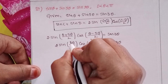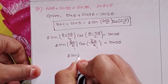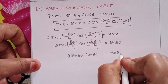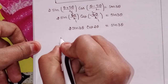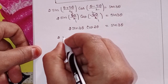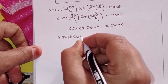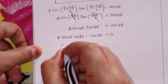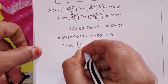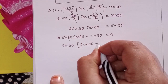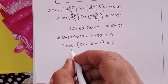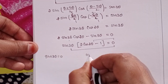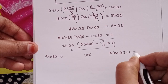Since cos(-θ) = cosθ, this becomes 2·sin3θ·cos2θ = sin3θ. Moving sin3θ to the left side: 2·sin3θ·cos2θ minus sin3θ equals 0. Taking sin3θ common: sin3θ·(2cos2θ - 1) = 0.